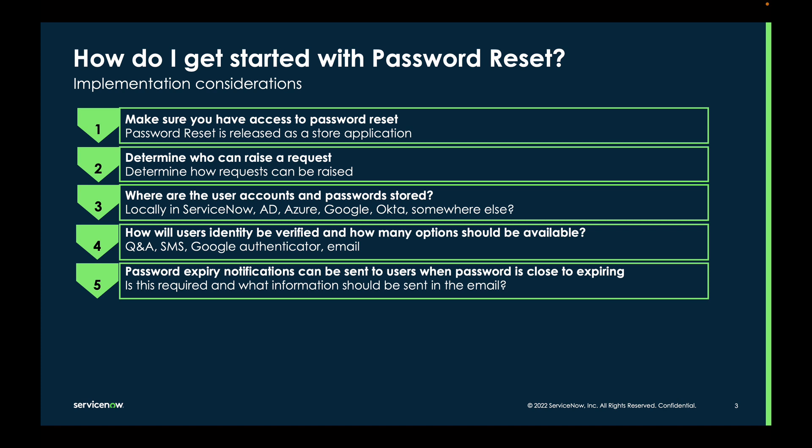Password expiry notifications can be sent to users when the password is close to expiring. The time period and frequency of these notifications can be configured, as well as the contents within those notifications. Notifications should be sent on traditional channels like email, as well as newer channels like the mobile app. From San Diego, the password expiration data is consumed from the credential store.